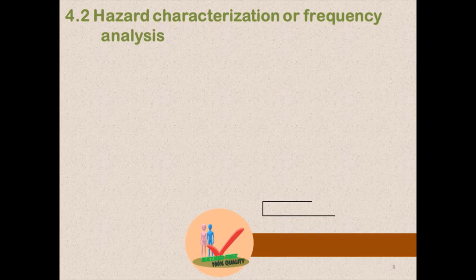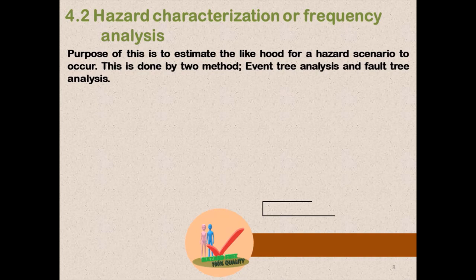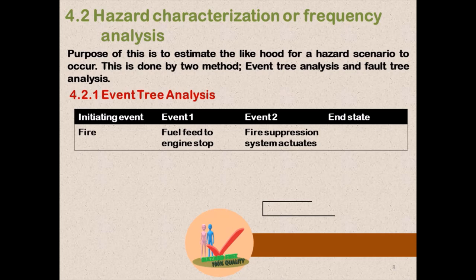The second step is hazard characterization or frequency analysis. The purpose is to estimate the likelihood for a hazard scenario to occur. This is done by two methods: event tree analysis and fault tree analysis. The event tree analysis process has four parts: initiating event, event 1, event 2, and state.